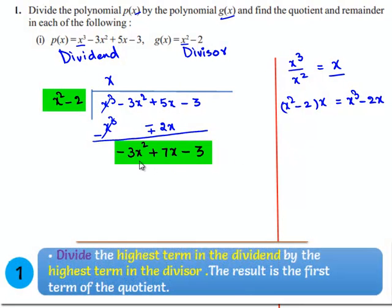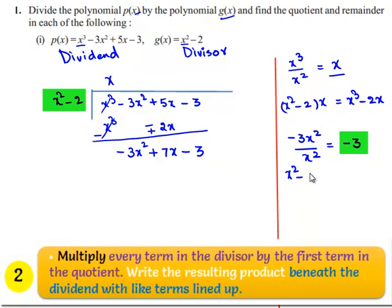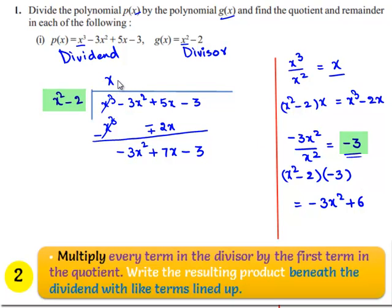Now the highest degree term of the new dividend is minus 3x square and the highest degree term of the divisor is x square. On dividing them, we get minus 3. The divisor x square minus 2 multiplied by minus 3 gives minus 3x square plus 6. So minus 3 is written in the place of the quotient, making it x minus 3, and the multiplication minus 3x square plus 6 is written here.